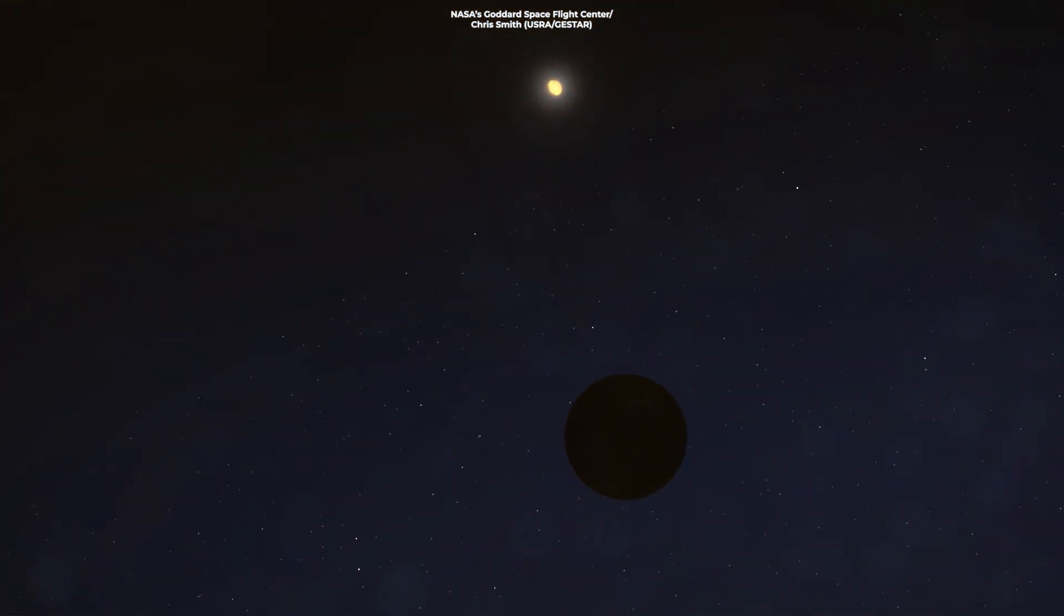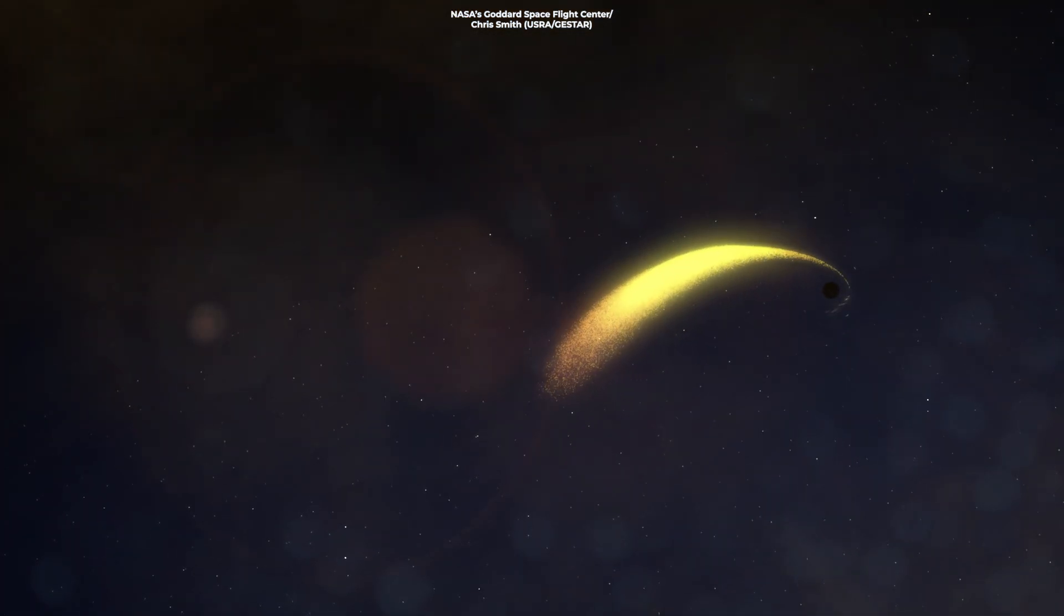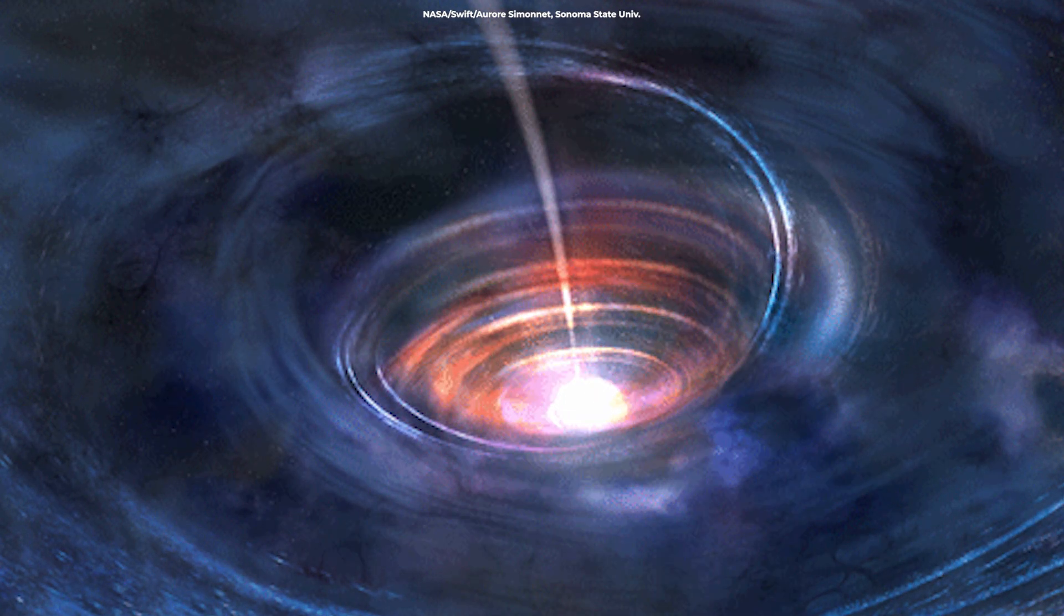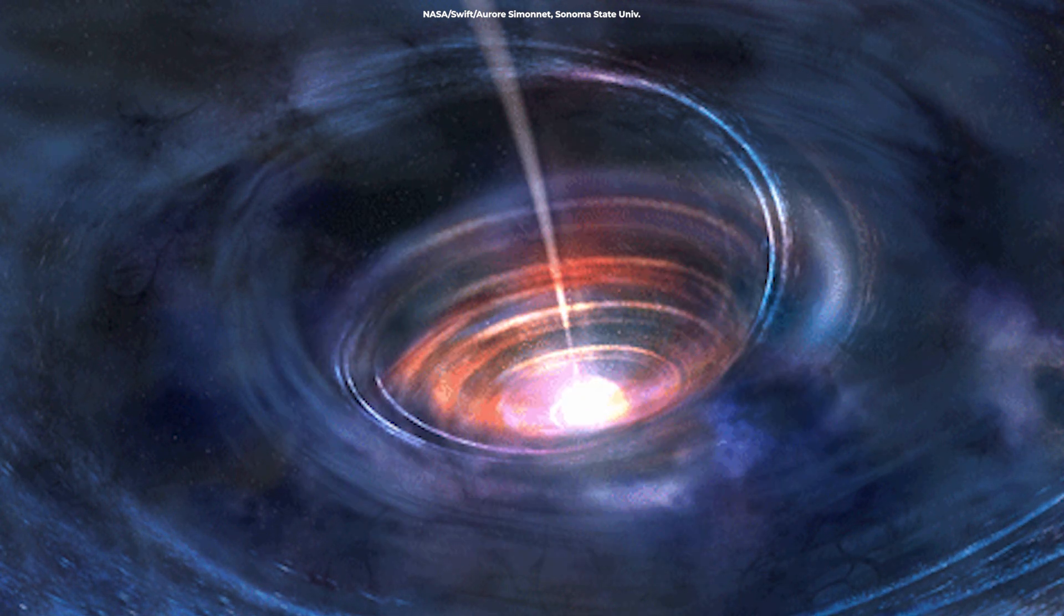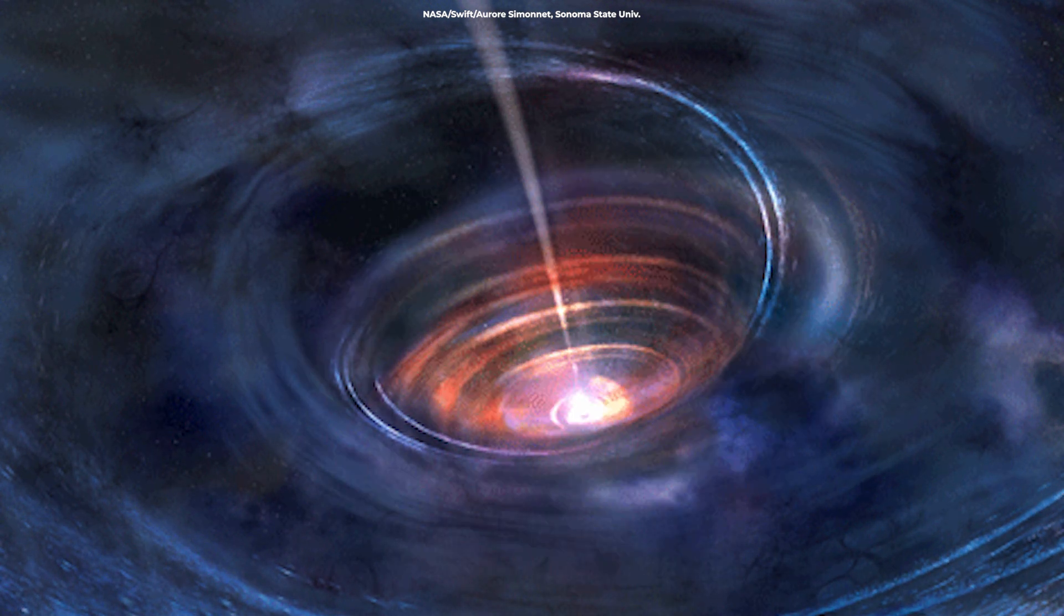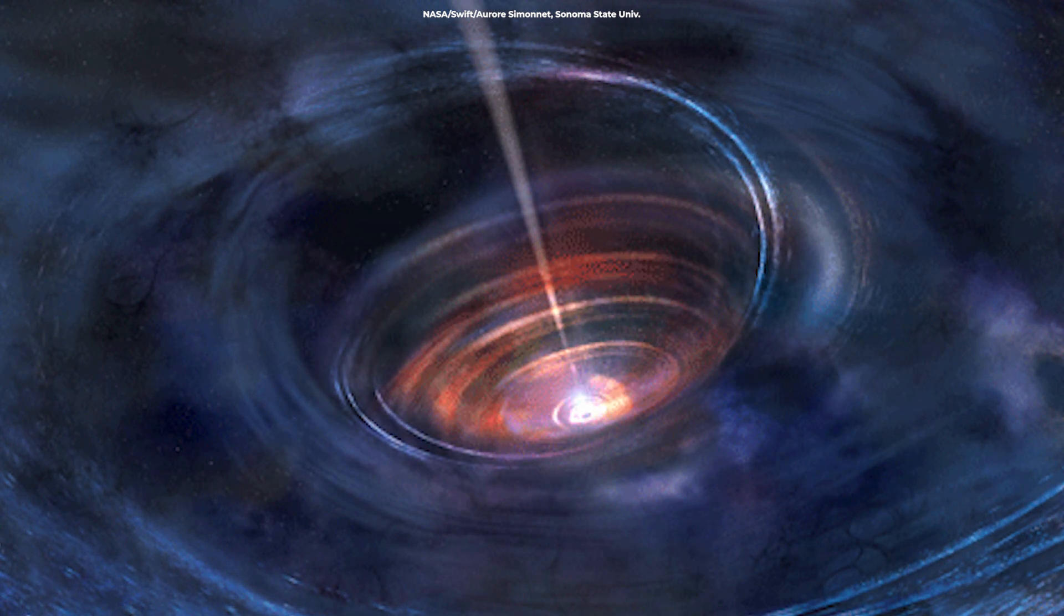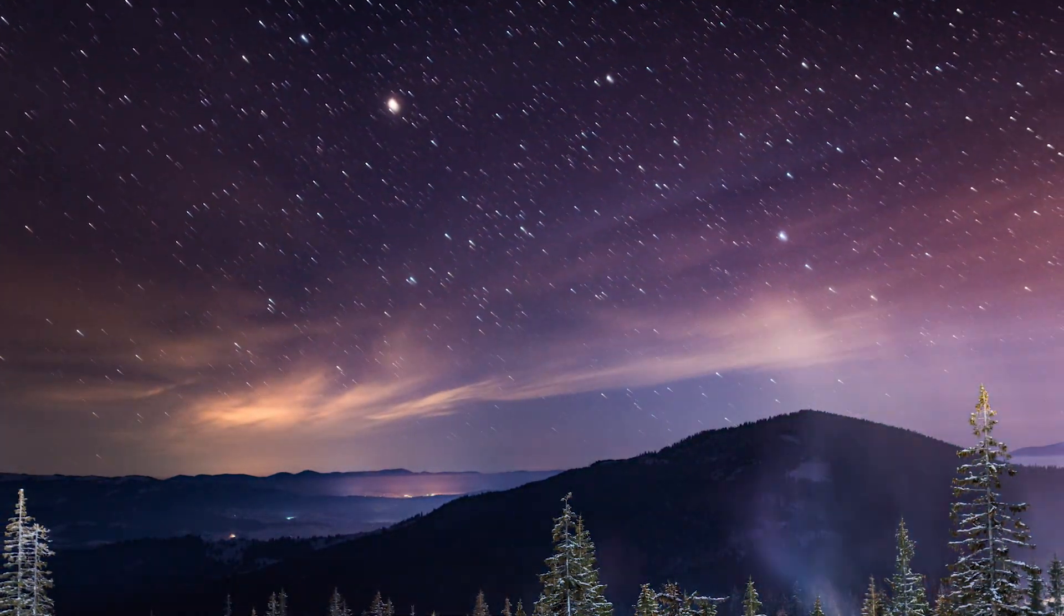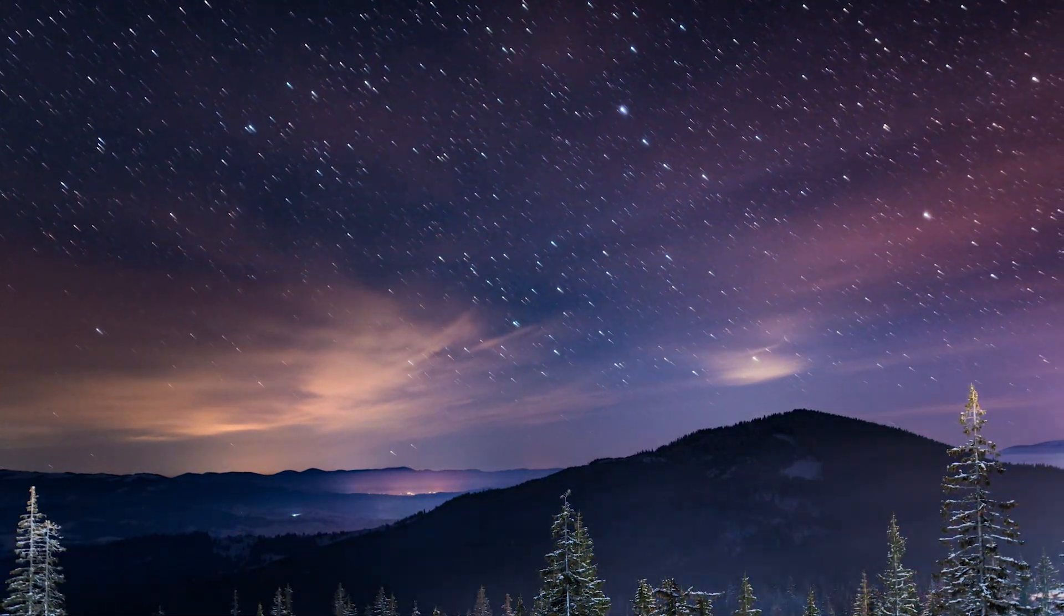Such TDEs happen when stars get too close to black holes and the black hole's tidal forces tear the unlucky star apart. In about 1% of TDEs, black holes shoot jets of plasma and radiation from their poles. Such events are very poorly understood because we've found only a handful of them. Finding them is very important for us to understand how the jets form and why they occur in such a small fraction of TDEs.